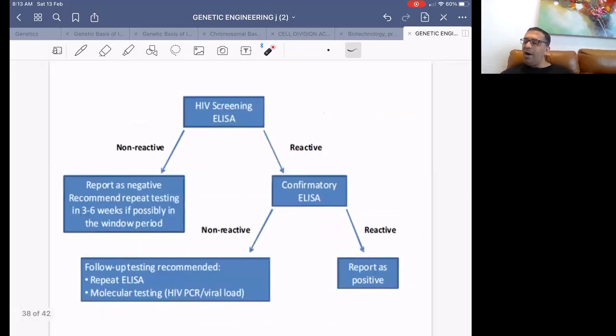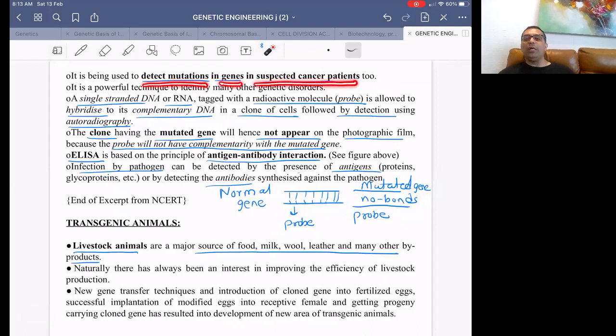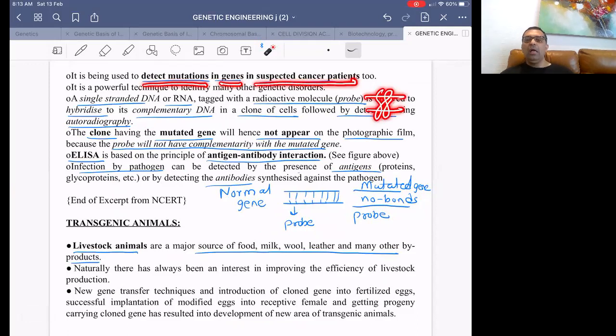Early detection of HIV is done in a suspected AIDS patient by PCR. Similarly, for cancer, mutations in genes in suspected cancer patients - how do you detect the mutated gene before signs and symptoms appear?